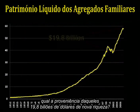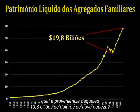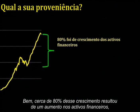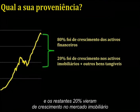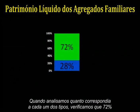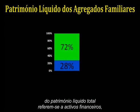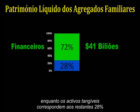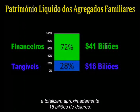Where did that $19.8 trillion in new wealth come from? About 80% of that growth came from a rise in financial assets, and the remaining 20% came from growth in real estate and other tangible assets. When we look at the breakdown, 72% of the total net worth consists of financial assets totaling about $41 trillion, while the tangible assets are the remaining 28%, totaling around $16 trillion.